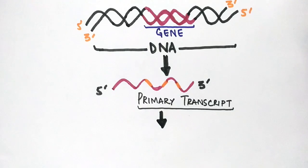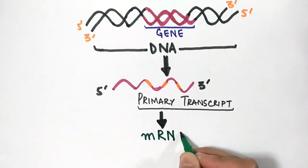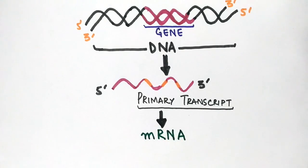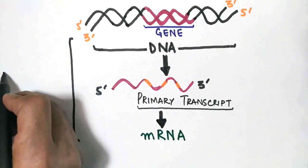For this, there occurs RNA processing where introns are removed as they are non-coding sequences, while exons are left as such because exons contain the whole information to be expressed later on. Then finally we get an mRNA molecule, and the whole process from DNA to mRNA is termed transcription.